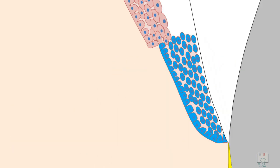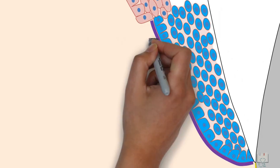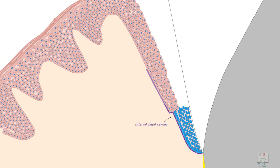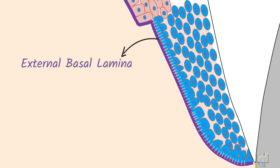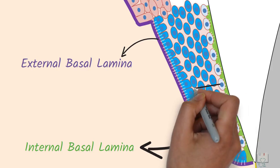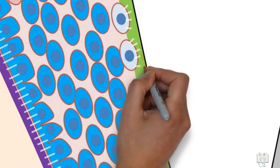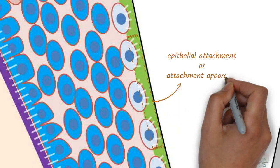Junctional epithelium is the only epithelium which has 2 basal laminae at its 2 interfaces. At the connective tissue interface, with no rete pegs, it has the external basal lamina which is attached by hemidesmosomes. The external basal lamina is continuous with the basal lamina of the sulcular epithelium and gingival epithelium. The second basal lamina at the enamel interface is called the internal basal lamina. The cells in direct contact with the internal basal lamina and having hemidesmosomes with it are called DAT cells. The combination of the hemidesmosomes and internal basal lamina attaching the junctional epithelium to the tooth is called epithelial attachment or attachment apparatus.